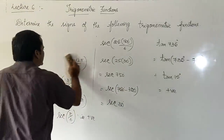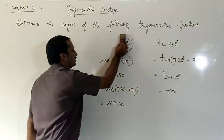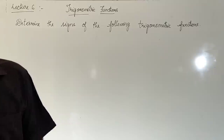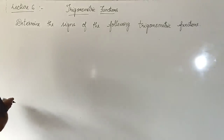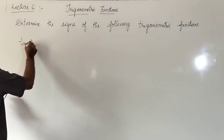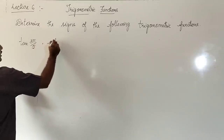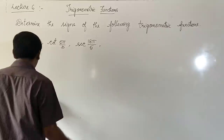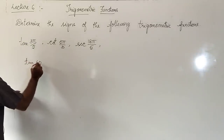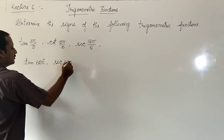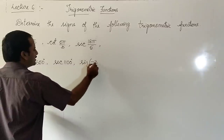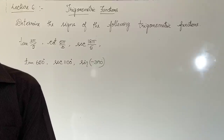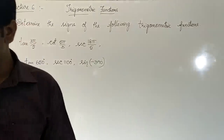I will give you a few problems of this kind for you to solve and check whether each is positive or negative: tan(3π/5), cot(5π/3), secant(18π/5), tan 650 degrees, secant 1100 degrees, sin(−390 degrees). Try these problems. Do not send the answers in the group.